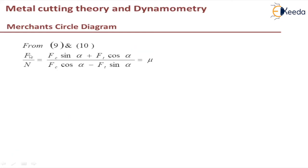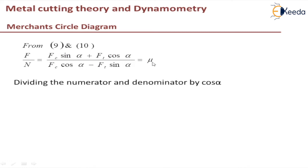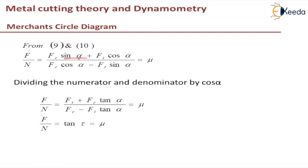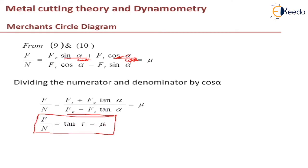Using equations 9 and 10 for friction force and normal force, I can write the ratio F over N. Dividing numerator and denominator by cos(alpha), cos(alpha) cancels out, and I get FT plus FC tan(alpha) in the numerator, and similarly in the denominator. Finally, the result is F over N equals tan(tau), which equals mu — the coefficient of friction. This is the equation for all the forces involved in the Merchant Circle diagram.